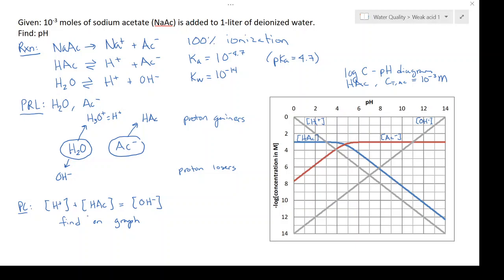The way that I solve these is I look at the left and right hand sides of the proton condition and evaluate those separately. On the right hand side I only have hydroxide, so I'm going to start in this corner and follow the hydroxide line. I'm looking for the place where it meets the hydrogen plus the acetic acid. On the left hand side I'm looking at the hydrogen ion plus the acetic acid concentration. It's going to be just above the hydrogen line because it's the summation, but not very much above because this is a log log plot.